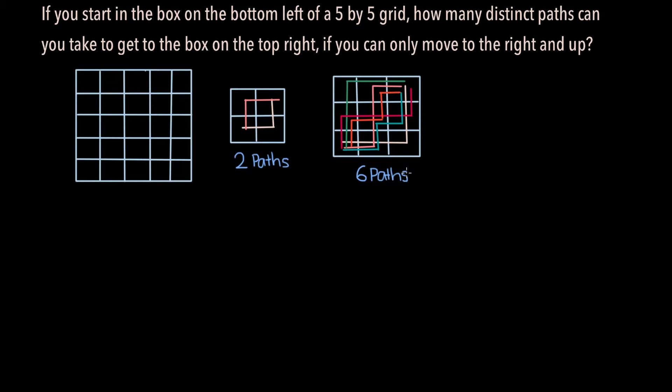One thing to notice is that for a 3x3 grid, all of the paths involve moving right twice and up twice in total, but not necessarily in that order. We can extend this logic to our 5x5 grid to determine that we need to move right 4 times and up 4 times in total. This leads to a total of 8 moves.